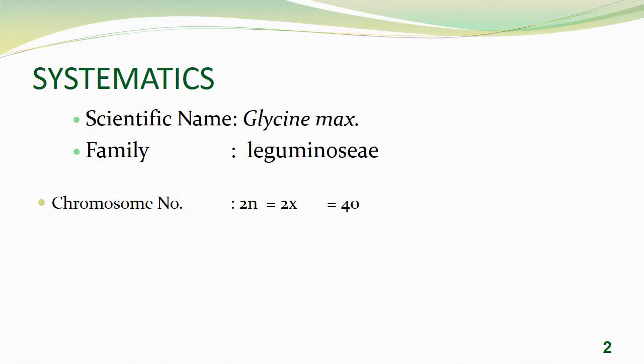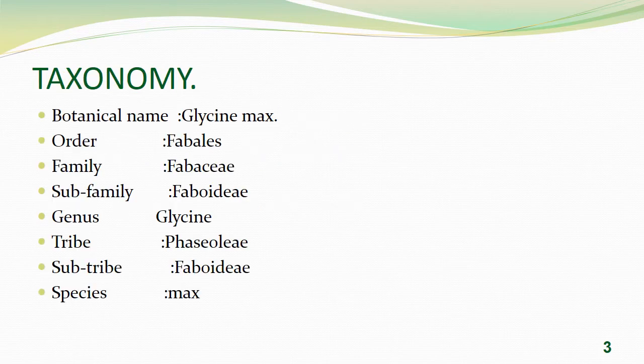The scientific name of soybean is Glycine max, belonging to family Leguminaceae. The chromosome number is 2n equal to 40. Taxonomical classification: it belongs to order Fabales, family Fabaceae, subfamily Fabioideae, genus Glycine, tribe Phaseoleae, sub-tribe Glycininae, species max.